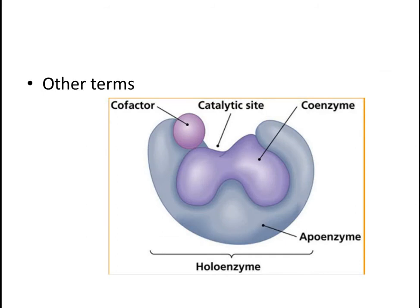Most enzymes are protein in nature, but enzymes need some other accessory materials to carry out the reaction. If these substances are absent, then the enzyme may not carry out the reaction. Most enzymes depend on substances which are non-proteinous in nature. These substances are called co-factors or co-enzymes. If these substances are metallic in nature they are called co-factors, and if they are organic compounds or organometallic compounds they are called co-enzymes.